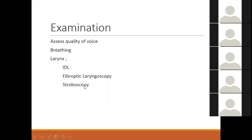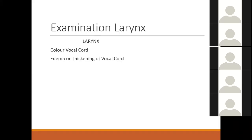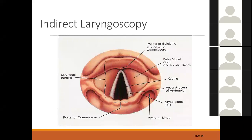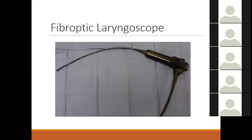Stroboscopy is not used routinely but is useful in chronic laryngitis: the stroboscope slows the movement of the vocal cords so you can visualize them better, particularly in patients with thickened vocal cords. Always examine the neck in patients with hoarseness in case there is a malignancy. On indirect laryngoscopy you see right and left vocal cords. With fibreoptic laryngoscopy you pass the scope through the nose into the throat and see the vocal cords, anterior commissure, false cords, posterior commissure, and trachea.